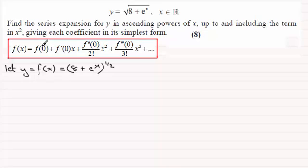Now we need to get f of 0, f dash of 0, f double dash of 0 and so on, the first differential, second differential, whatever. So I'm going to first of all find out f of 0. So from this, we've got therefore f of 0 equals e to the power 0 is 1, 8 plus 1 is 9, 9 to the power half is 3.